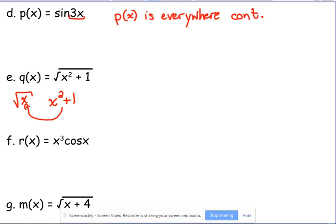Well, what's under the square root right here? x squared plus 1. Is x squared plus 1 going to be greater than or equal to zero? Yeah. If you square a number, it's always going to be positive. You add 1 to it, it's still going to be positive. So even though it's a square root function that normally has a restricted domain, because of that x squared plus 1, we're good. It's everywhere continuous.